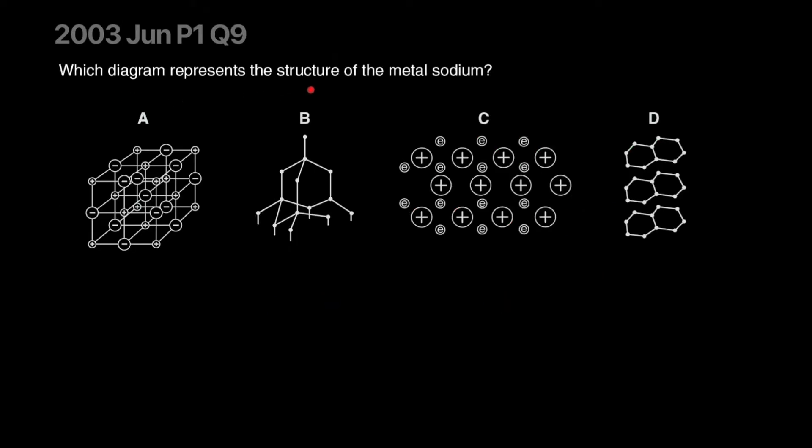Which diagram represents the structure of metal sodium? Sodium, being a metal, will have positive ions surrounded by a sea of electrons. This is your ionic compound, this is a giant covalent structure, then you have your metal, and the last one is graphite, poorly drawn graphite. Our correct answer is C.